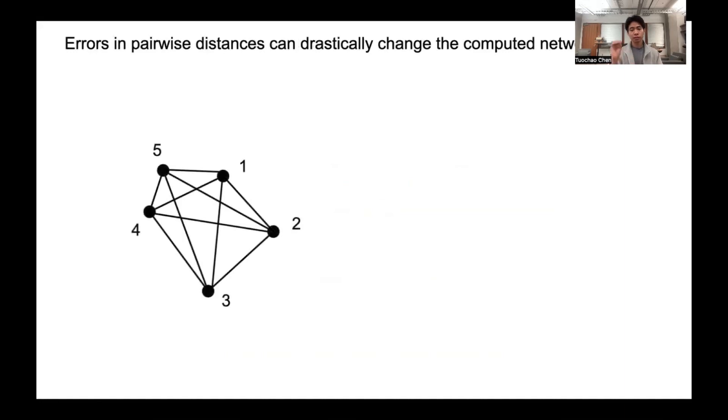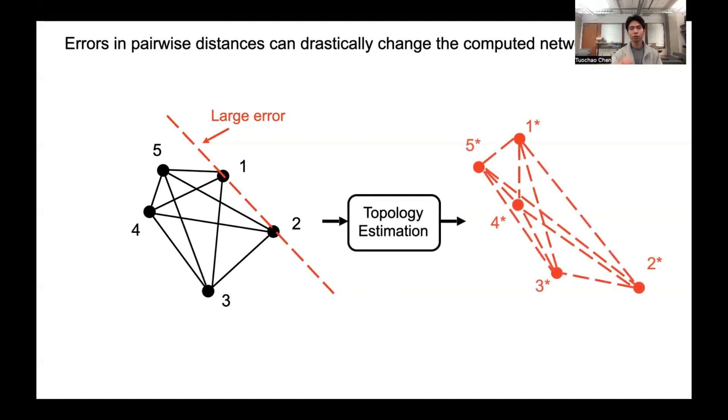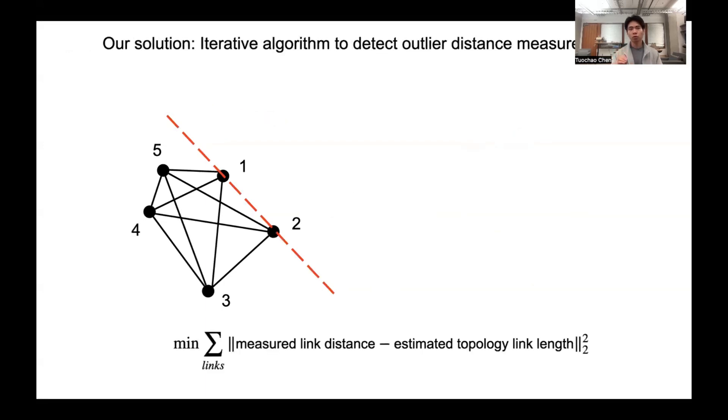The problem is that errors can drastically change the estimated topologies. Say this is the actual topology. If we have a large error measurement between nodes 1 and 2, as shown in the red line, then if we try to estimate the topology with this wrong distance measurement, the output topology will be drastically different.